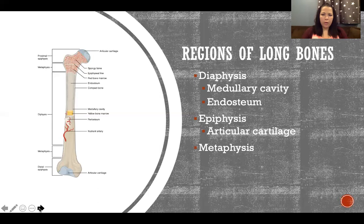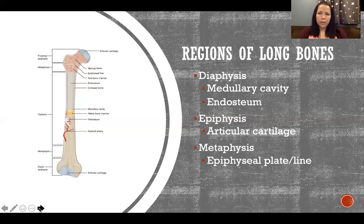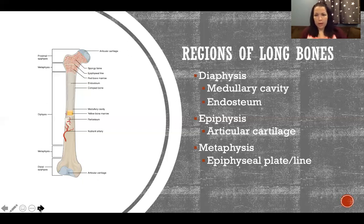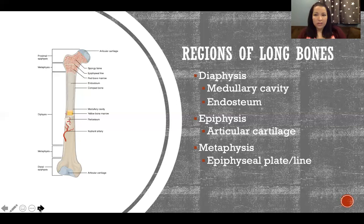The metaphysis of the bone is where the diaphysis and epiphysis meet. There are two metaphyses in every long bone, where the two epiphyses join the diaphysis. Within the metaphysis is either the epiphysial plate or the epiphysial line. The epiphysial plate is the growth plate — the fancy name for it. It's a plate of cartilage where the bone is growing in kids and adolescents. Whenever we're building new bone, we first build cartilage, then convert that cartilage into bone.